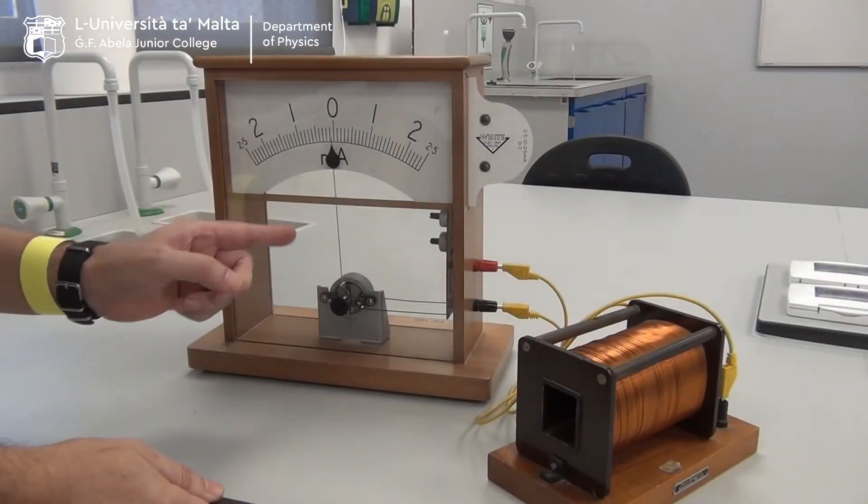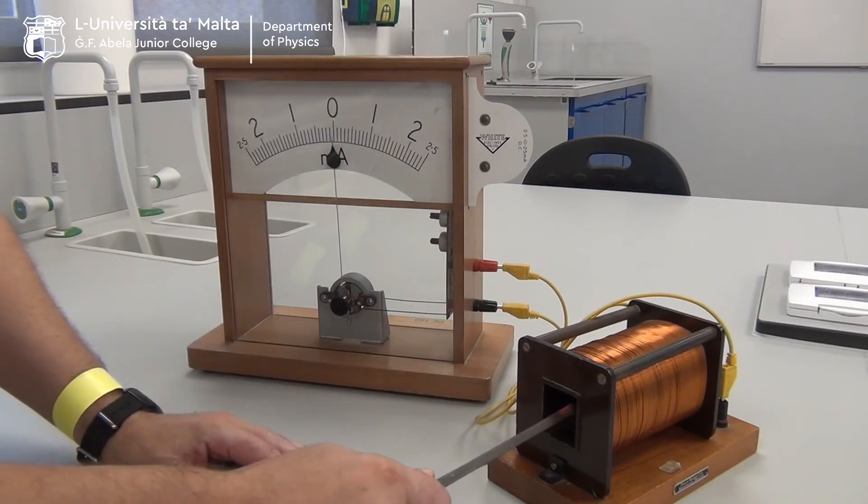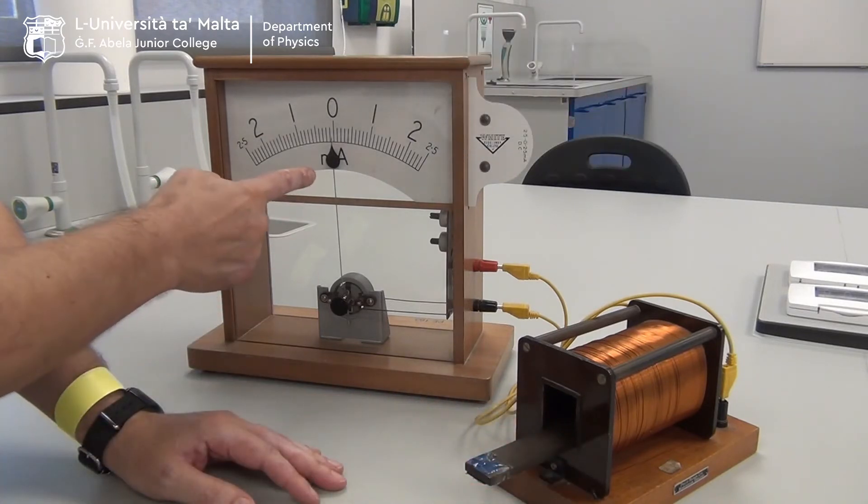Galvanometer reads zero. I'm going to pick up the magnet and I'm going to push it in slowly into the coil, and I see the deflection to the right. When I stop the magnet, the deflection will be zero.